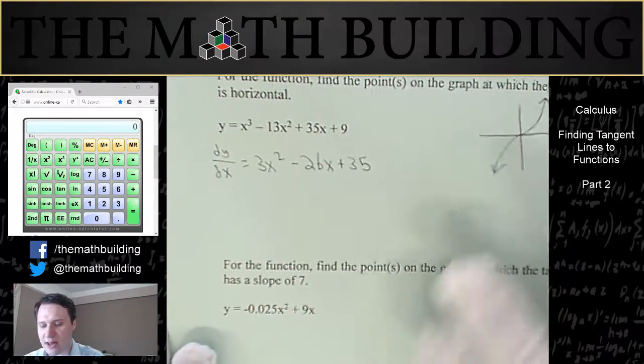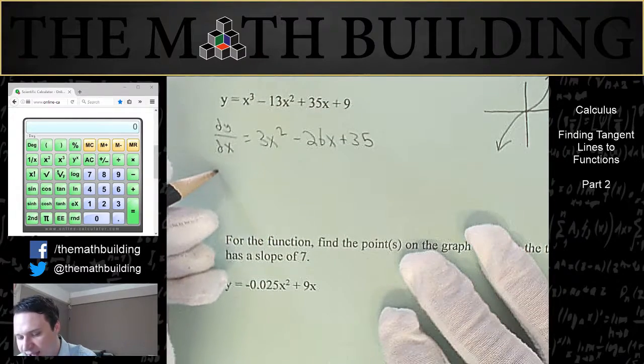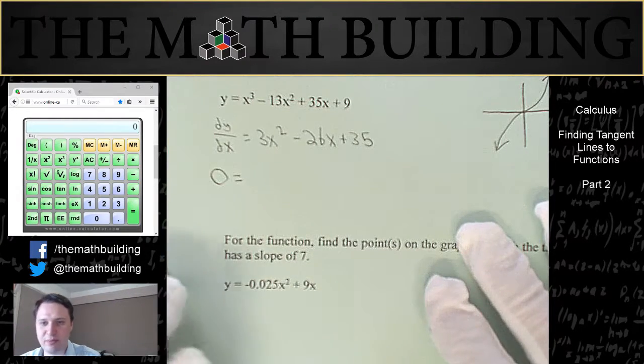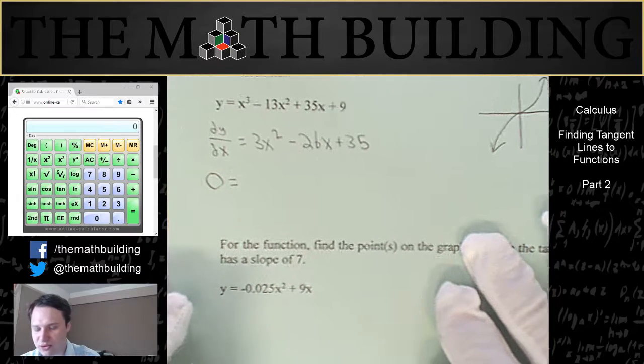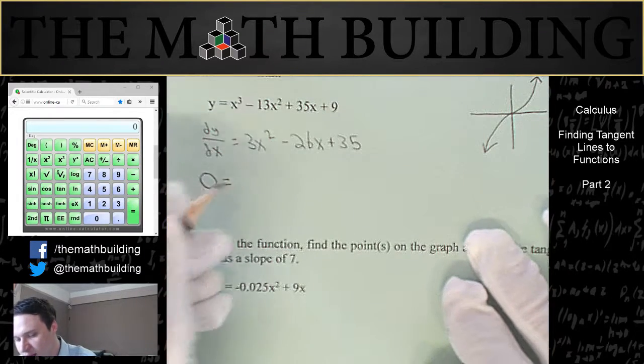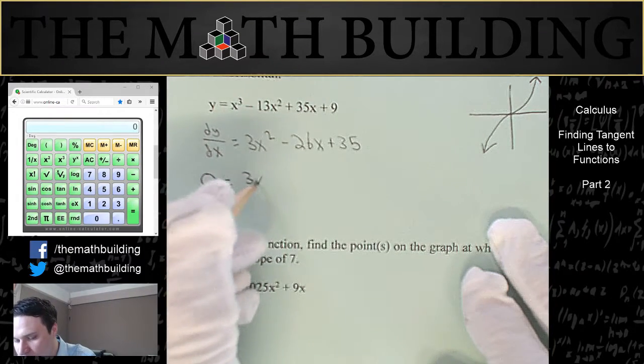And we want to find out when it's horizontal. So it's as simple as plugging in a zero right here. So we replace our derivative with a zero to try to find the slope where it's zero. And so now we just solve this equation.